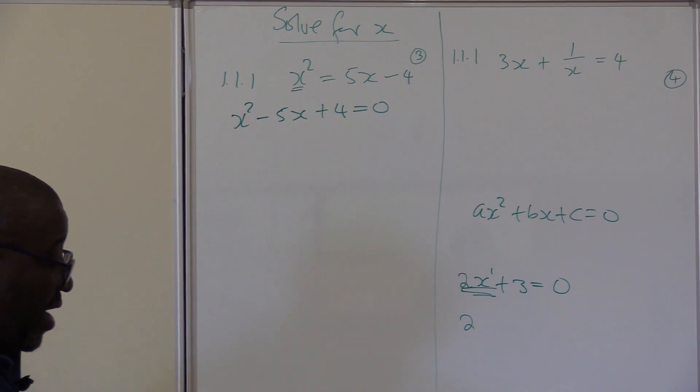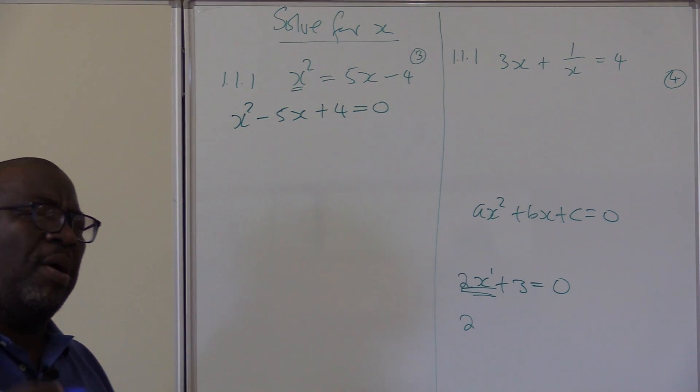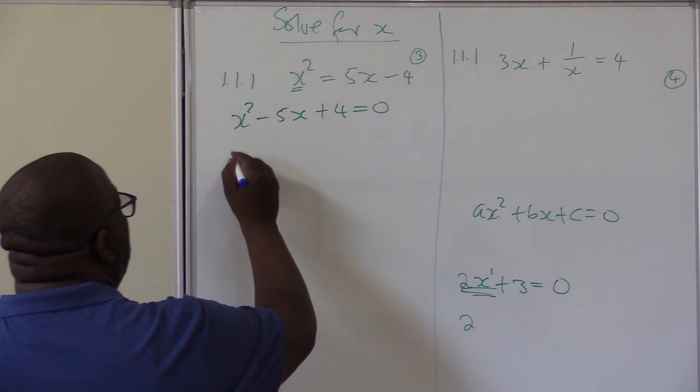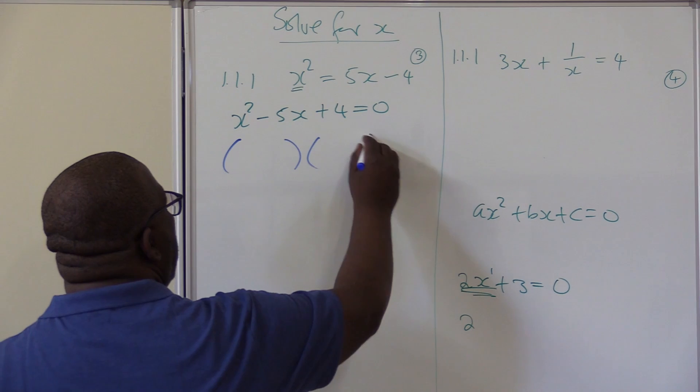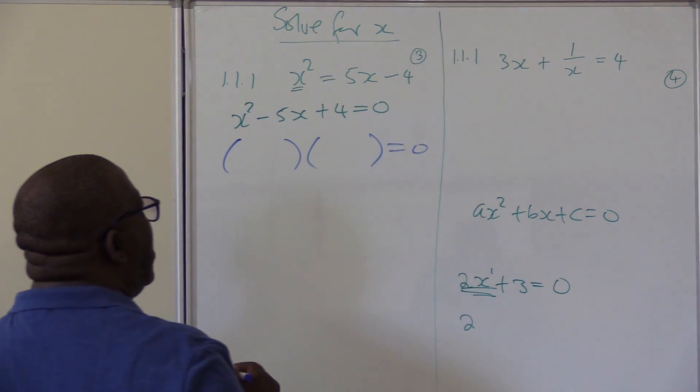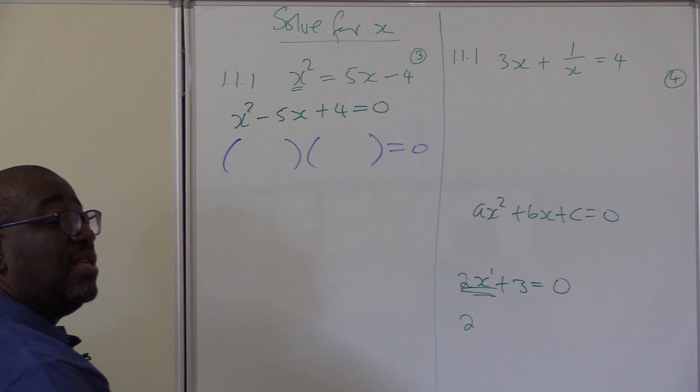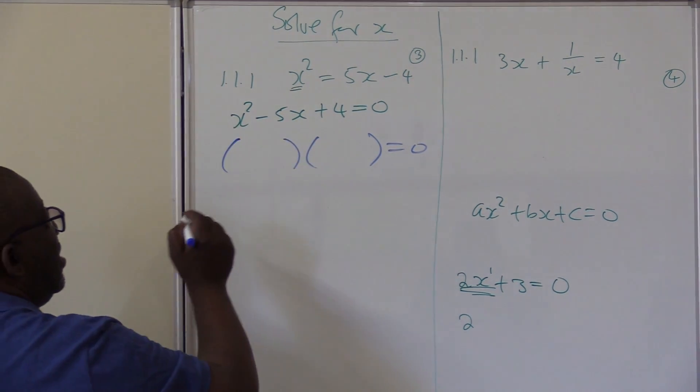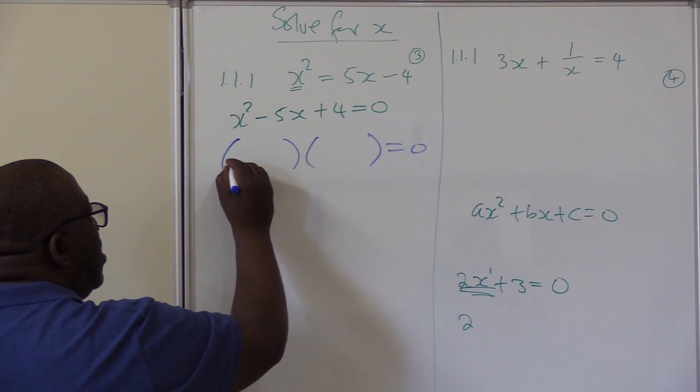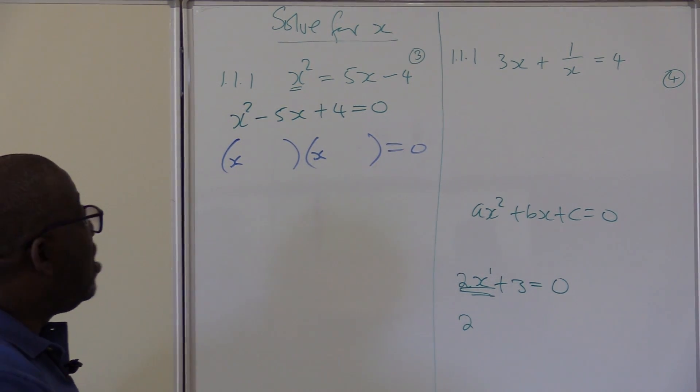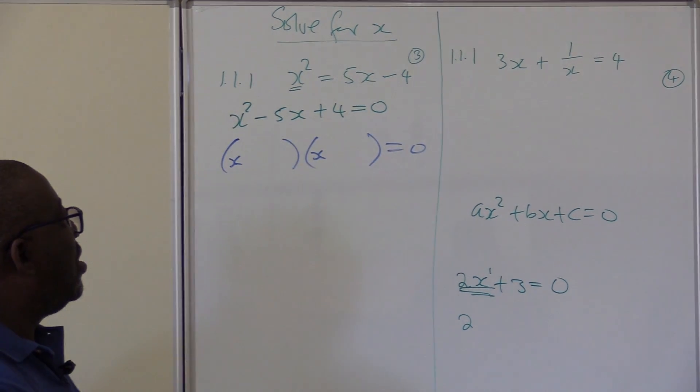Let us factorize. You will find factors. Don't rush into quadratic formula. Don't be lazy to factorize - you need to factorize. Open two sets of brackets equals to 0 on the right hand side. Remember, when you multiply in these brackets you must get that one exactly as it is. The first one is x squared. How do you find x squared? You say x times x.